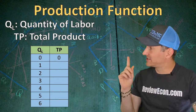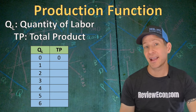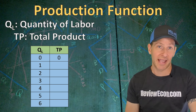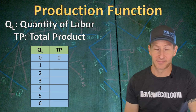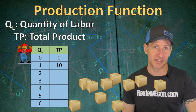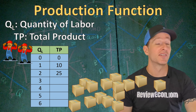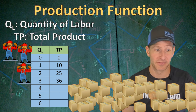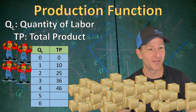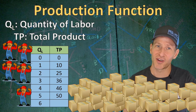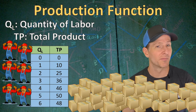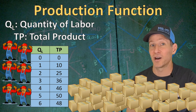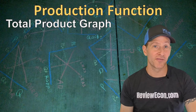Here we have a production function showing different quantities of labor a firm could hire and the total product — also called total physical product — which is the total quantity of output that can be produced with a given number of workers. If the firm hires one worker, it produces 10 units of output. A second worker gives a total of 25 units, a third gives 36 units, a fourth gives 46, and a fifth gives 50. But if the firm hires a sixth worker, production falls to 48 units of output.